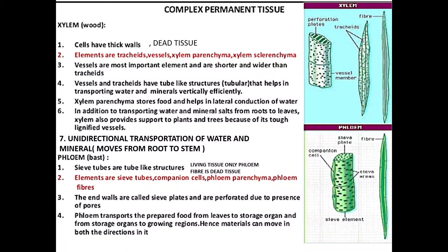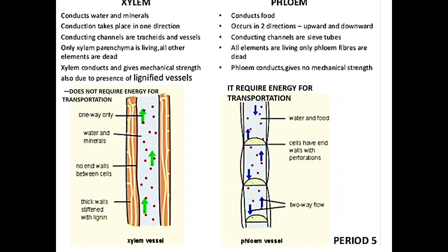In phloem, also known as bast, there is a sieve tube and companion cells. The companion cell helps the sieve tube function, and it is a living tissue. Food moves through the sieve tube via phloem. Phloem conducts food in both directions — upward and downward. In phloem, only the phloem fiber is a dead portion.